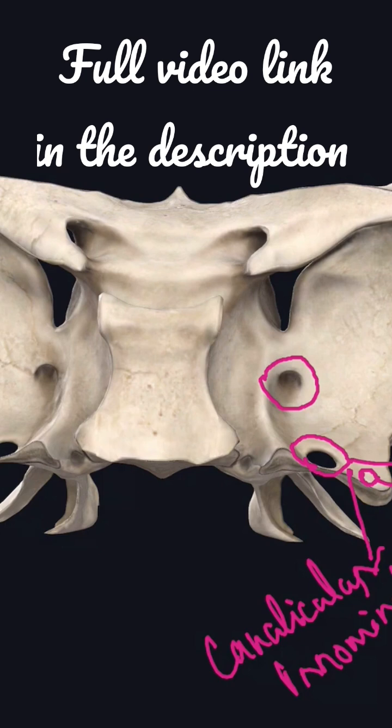Occasionally there will be a foramen in between the foramen ovale and the foramen rotundum, called the emissary sphenoidal foramen. If it is present, the emissary vein will pass through it.